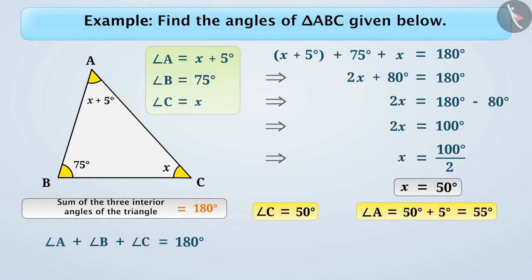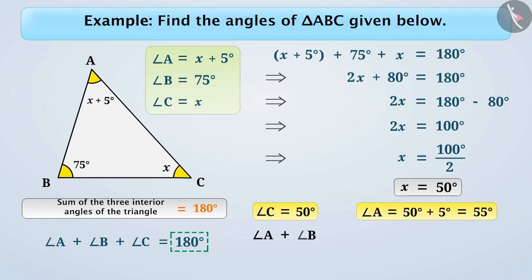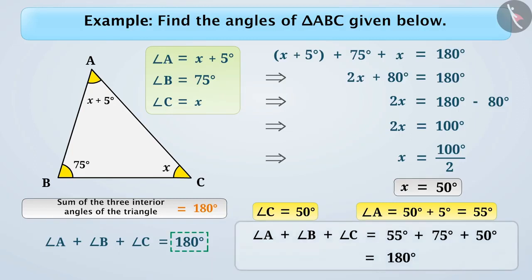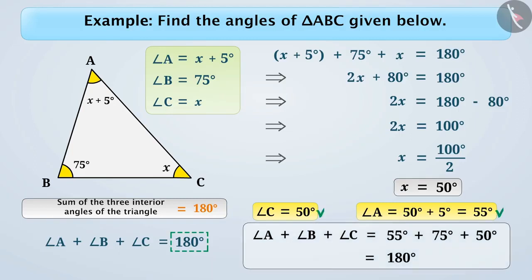If we want to verify the obtained answer, how do we do it? Think for a while. We will add all the three angles and check whether the sum is equal to 180 degrees or not. Here, angle A plus angle B plus angle C is equal to 55 degrees plus 75 degrees plus 50 degrees, which is equal to 180 degrees. That means our answer is correct.